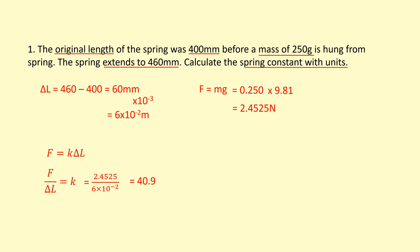So force is going to be the weight we just calculated and the extension. And so we get a spring constant of 40.9. To get the units, we can just use the equation here. So the force is in newtons, and the extension, the change in length, is in meters. So the unit is going to be newtons per meter.